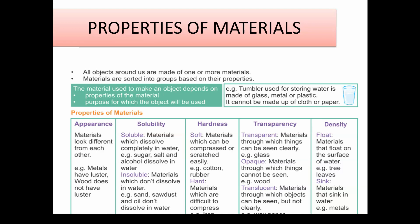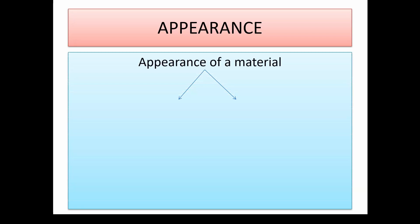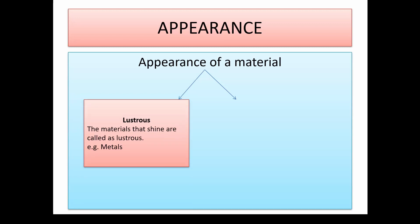As we are going to study the properties of materials today, I will be teaching you three properties: appearance, hardness, and transparency. Now let's understand what appearance is. All materials usually look different from each other. For example, wood has a different look compared to glass. In a similar way, silver would look different from paper. So all materials have a different appearance.